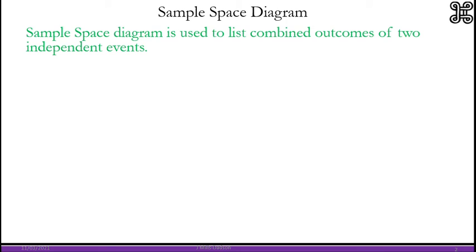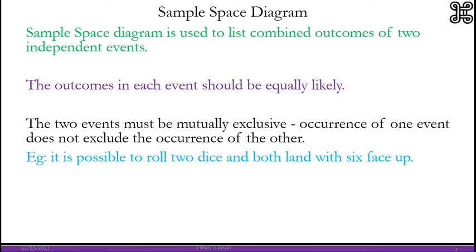Sample space diagram is used to list combined outcomes of two independent events. The outcomes in each event should be equally likely. The two events must be mutually exclusive. That means the occurrence of one event does not exclude the occurrence of the other.